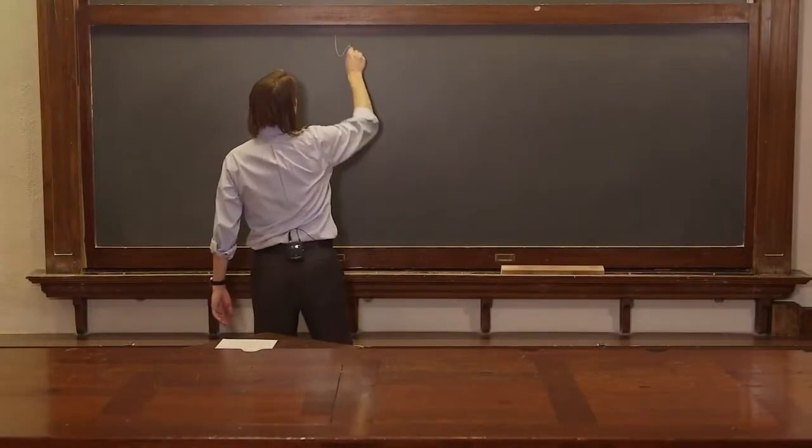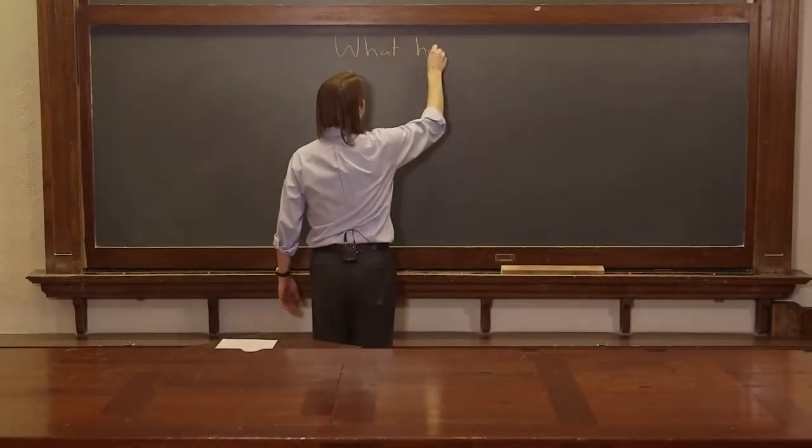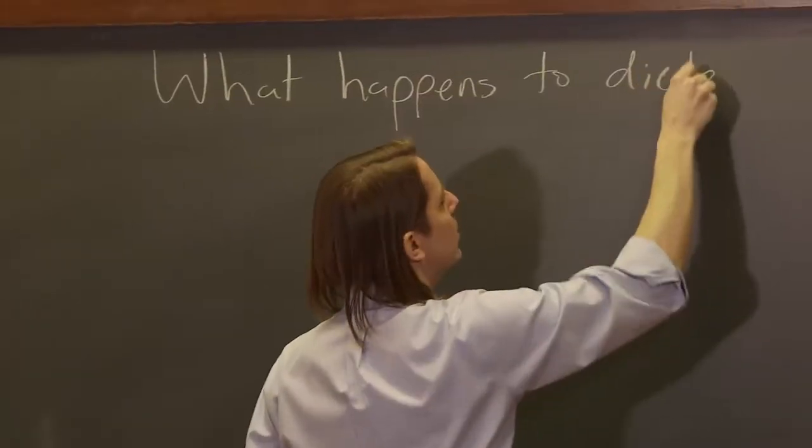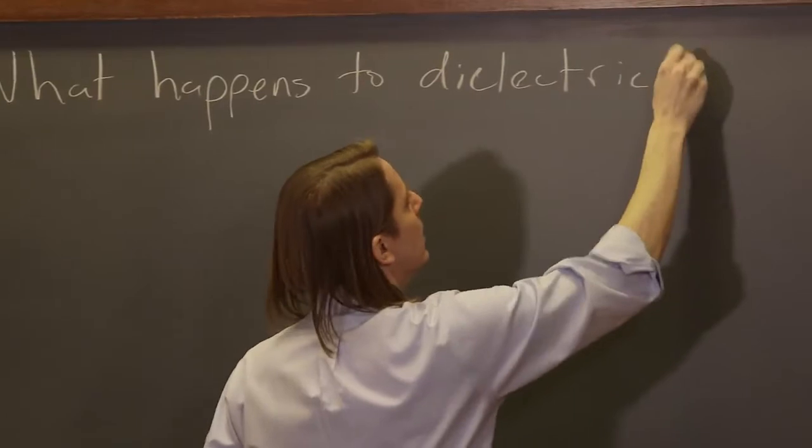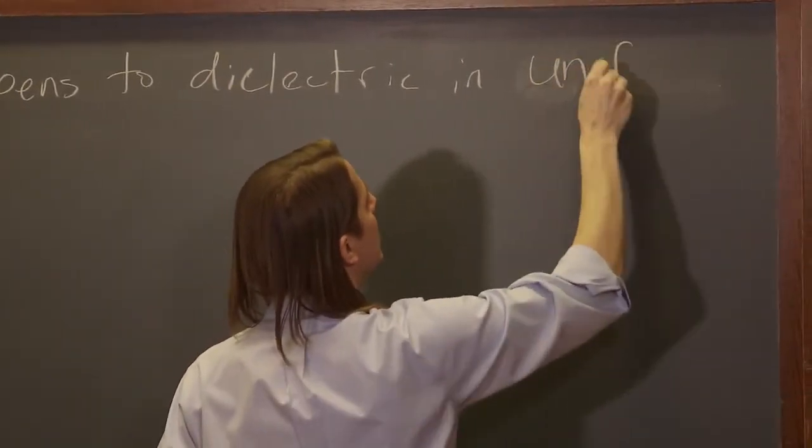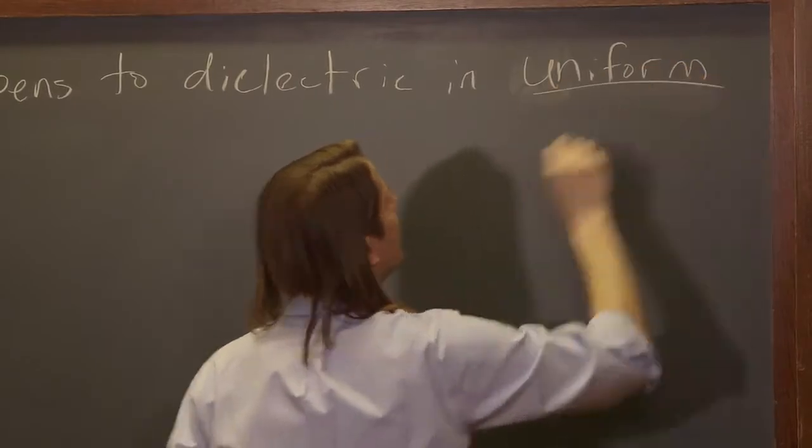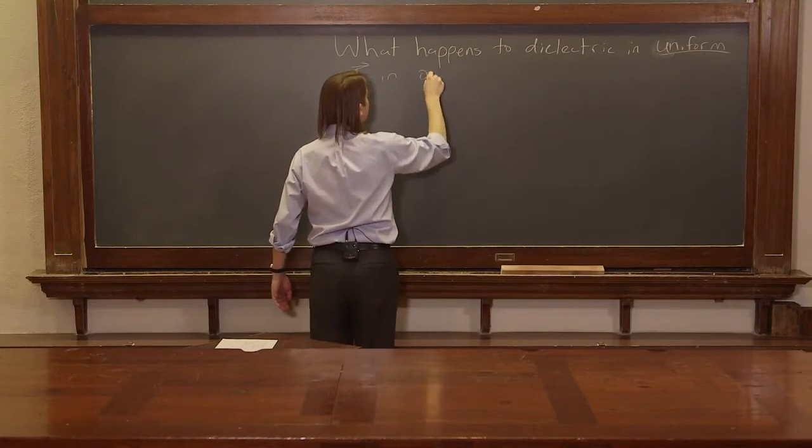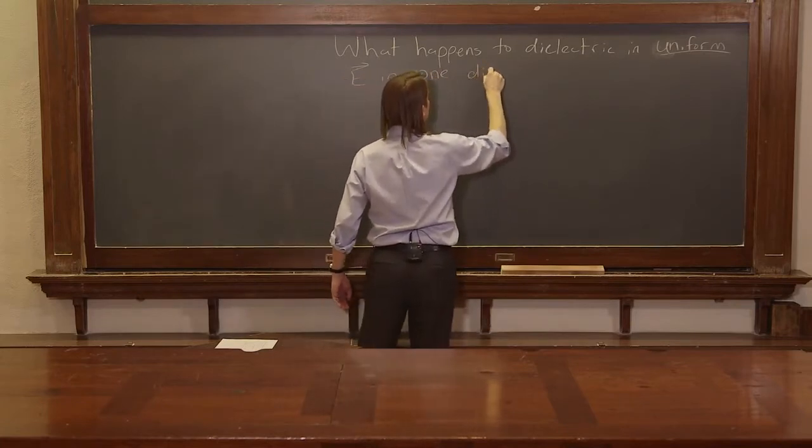So let's answer the question, what happens to a dielectric in a uniform E in? We'll make this simpler by making it uniform and also we'll make it simpler by just doing one dimension.